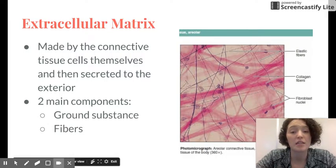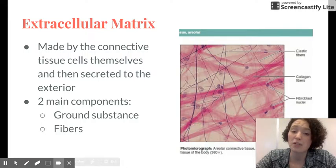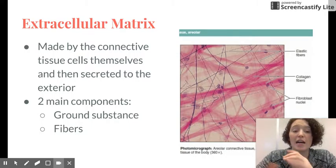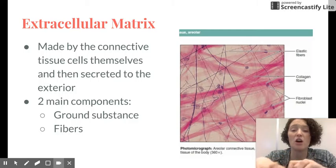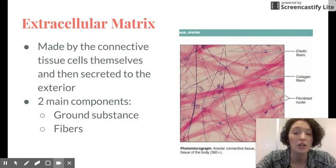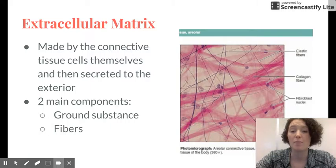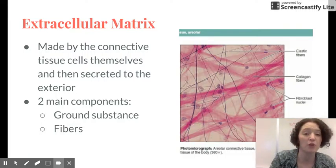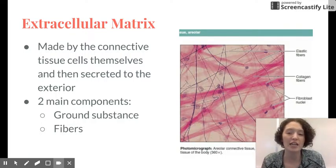Ground substance is going to mostly be water. There are going to be some adhesion proteins that allow the connective tissue cells to attach themselves to the matrix fibers. There's also going to be these large polar polysaccharide molecules and those are going to actually hold in water. So depending on the amount of those, if there's very little of those, the connective tissue might be very fluid. A medium amount, it might be gel-like.